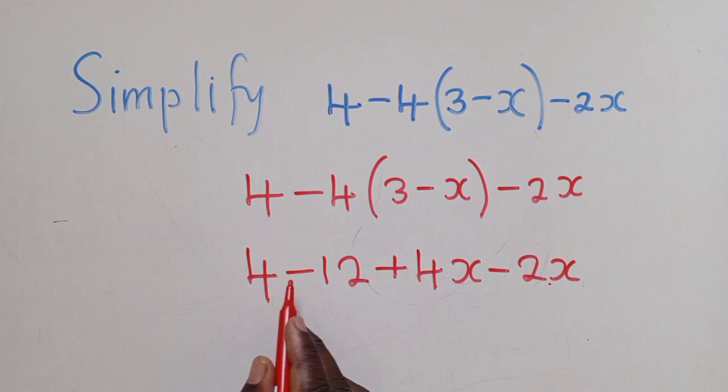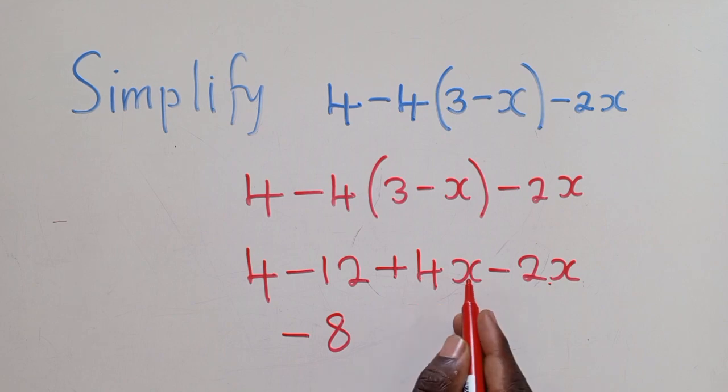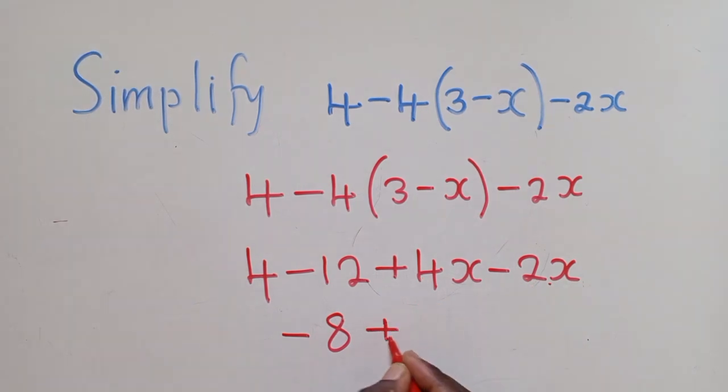4 minus 12, it's minus 8. 4x minus 2x, that will give us a plus 2x.